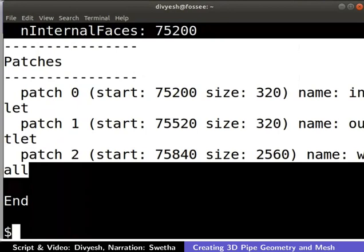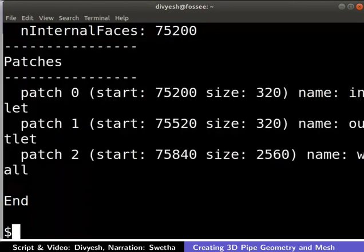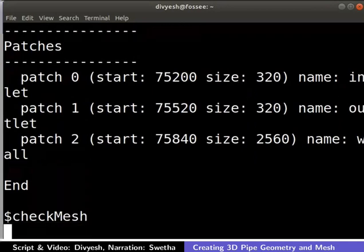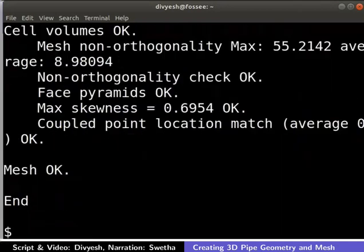As we can see in terminal results, three patches are created. Now, let us check mesh results and quality. To do that, type checkMesh in the terminal and press enter. Note that M in checkMesh is capital. We get the results printed of the mesh we created. Here we can see...